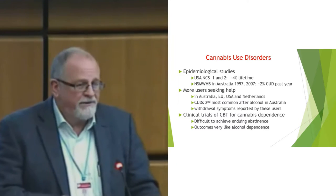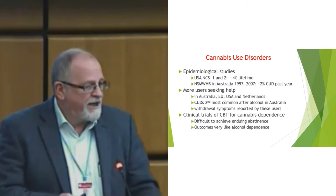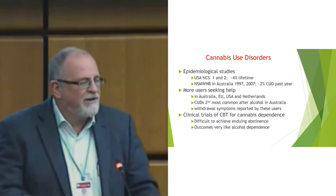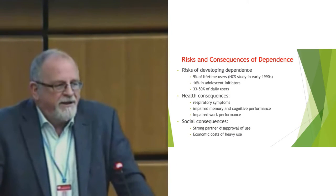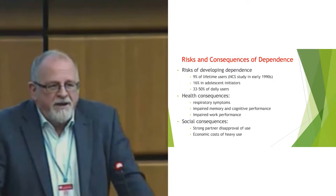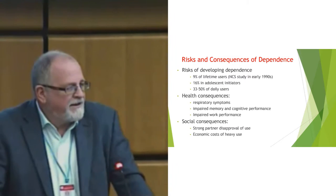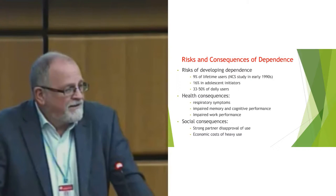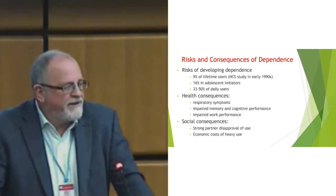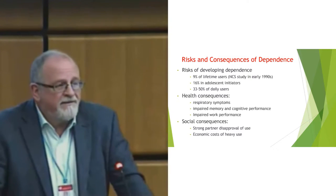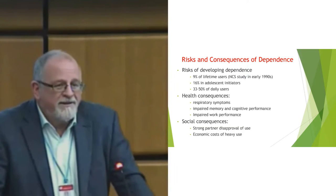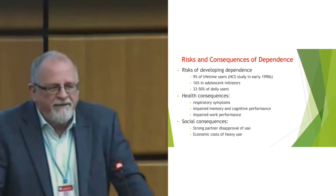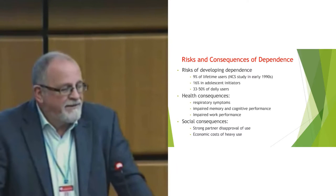Cannabis dependence can be treated — there are treatments such as CBT — but a lot of people still find it difficult to achieve enduring abstinence, and treatment outcomes for cannabis dependence resemble those for alcohol dependence. In terms of risk, estimates from the US suggest just under one in ten people who ever use this drug will develop a pattern of dependence. If they initiate as adolescents in their mid-teens, that risk goes up to roughly one in six. And if people get involved in daily use, the estimate is somewhere between one third and one half of daily users will develop dependence.